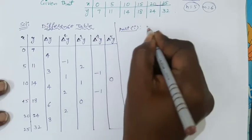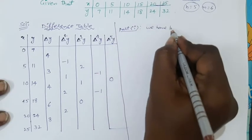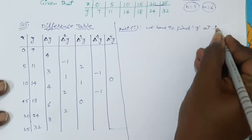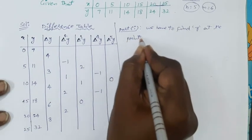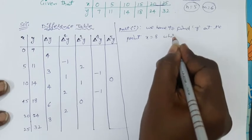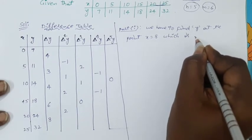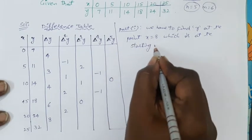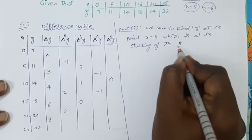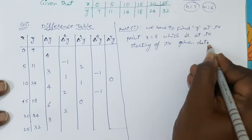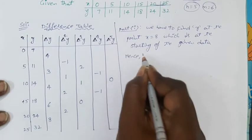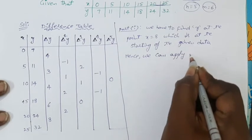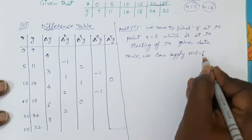In Part 1, we have to find the y value at x equal to 8, which is at the starting of the given data table. Hence, we can apply Newton's forward interpolation formula.